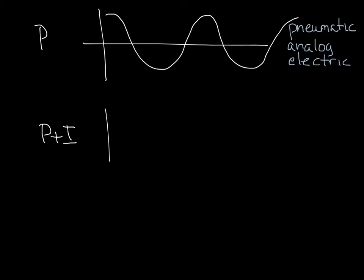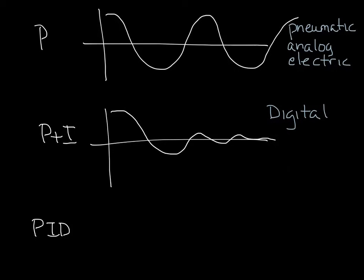PI controls will overshoot, but not by as much as proportional, and is only available in digital controls. And PID controls will control the system and not overshoot, and is also only available in digital controls.